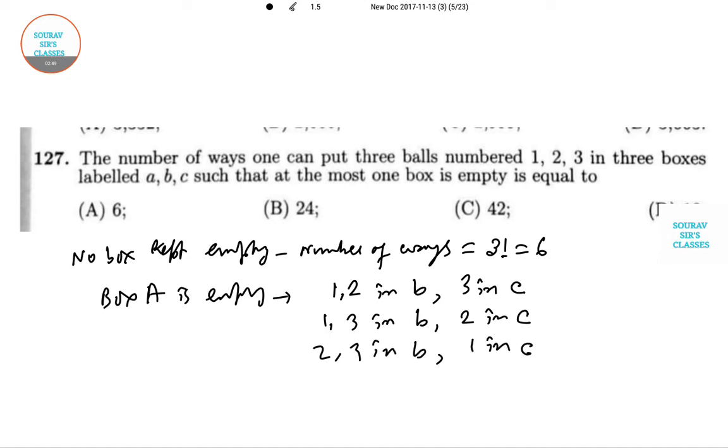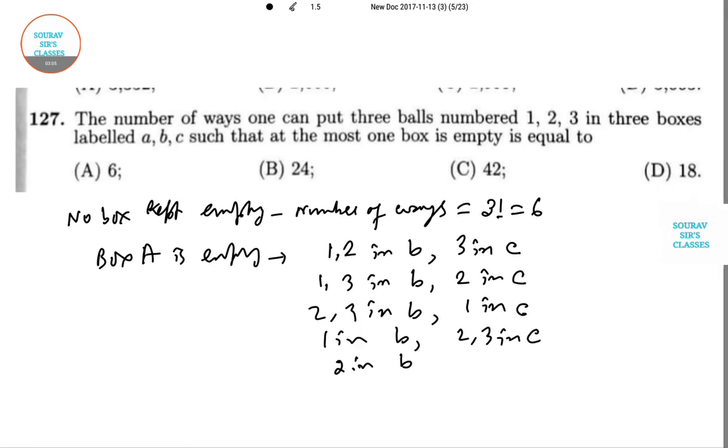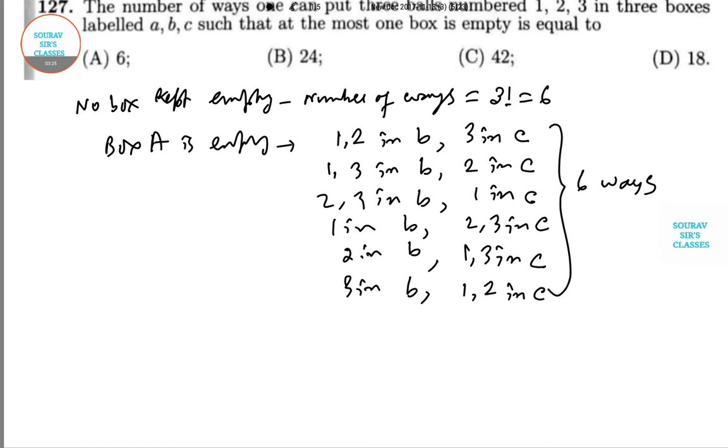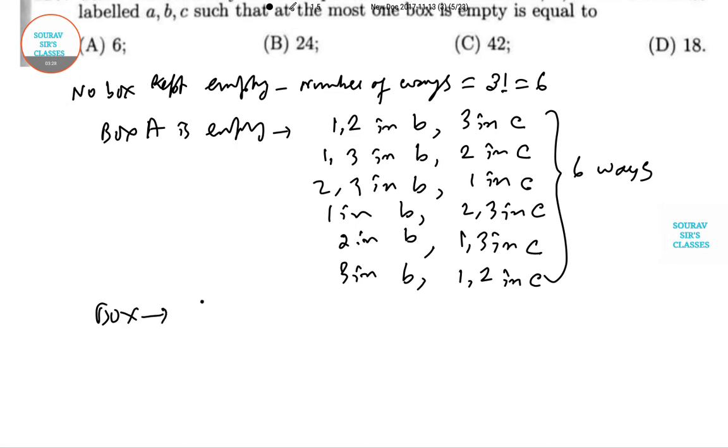Or 1 in B and 2,3 in C, or 2 in B and 1,3 in C, or 3 in B and 1,2 in C. So here we have 6 ways. Similarly for box B we have 6 ways, and for box C we have 6 ways.